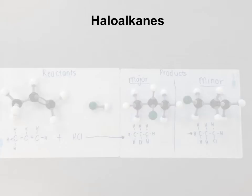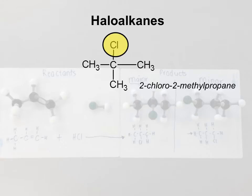Right, haloalkanes. Here we go, here's an example. A haloalkane is an alkane that has a chlorine, bromine, or iodine functional group. This one has a chlorine, so we're going to name it chloro, so we have here 2-chloro-2-methylpropane.